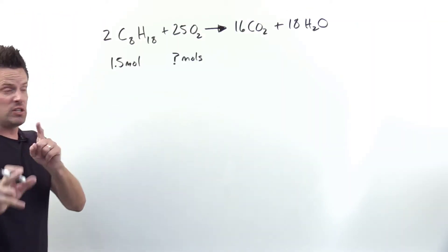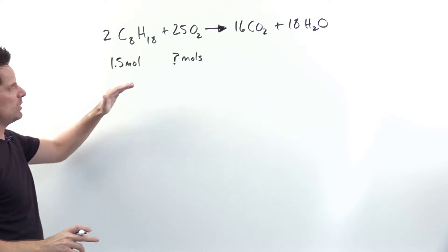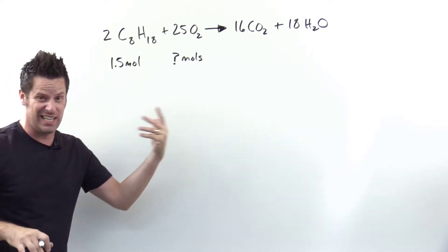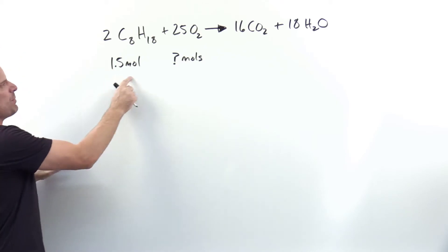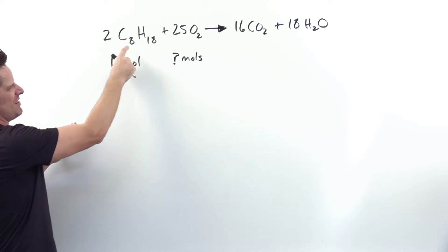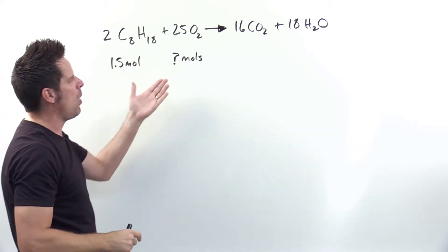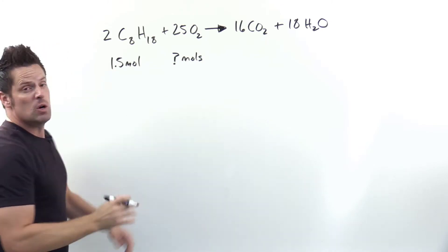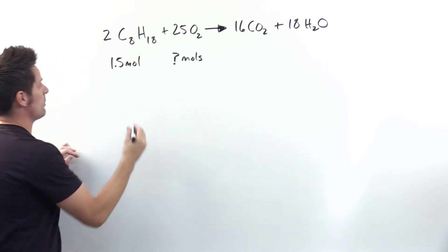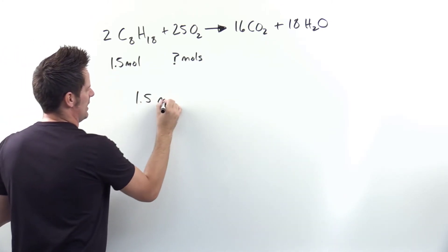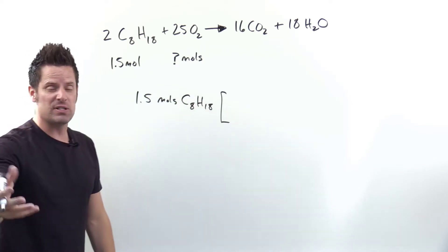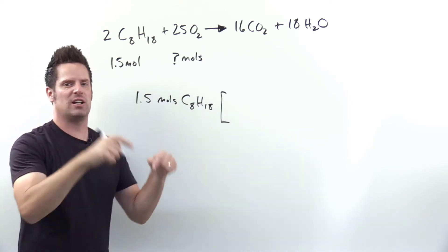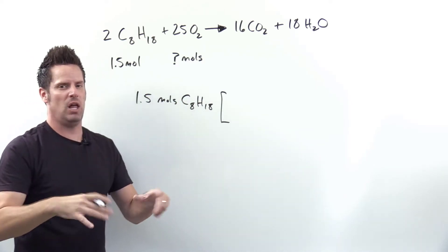Part A: for this balanced chemical equation, make sure it is balanced before you proceed — conveniently, it is. We're given 1.5 moles of octane and asked how many moles of O2 we need. We start by writing down 1.5 moles of octane and then use the principles outlined in our dimensional analysis / unit conversion chapter.